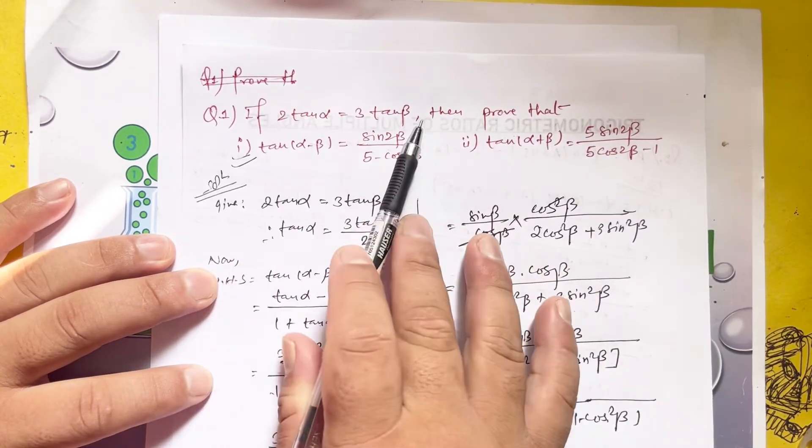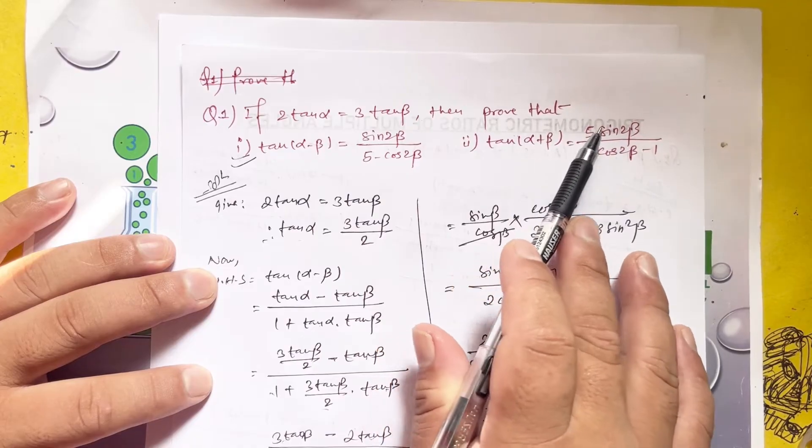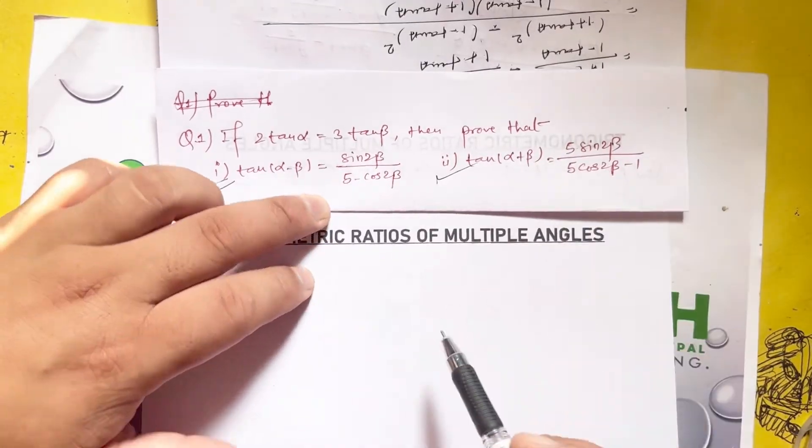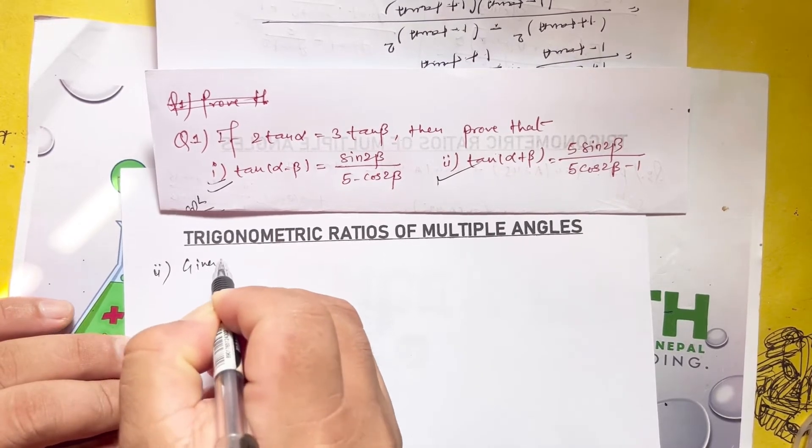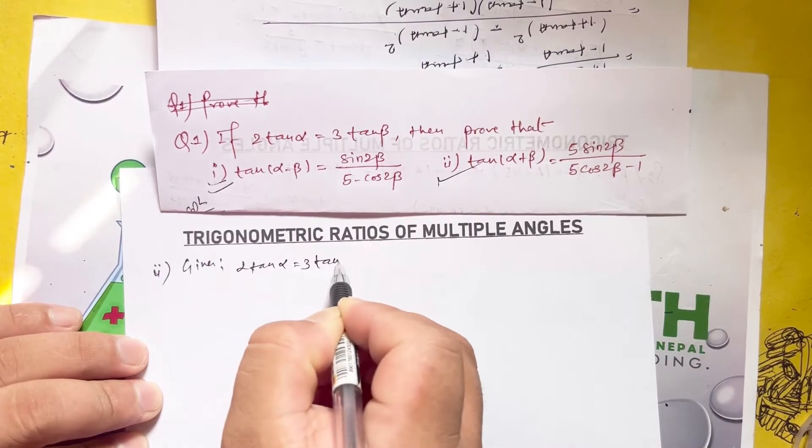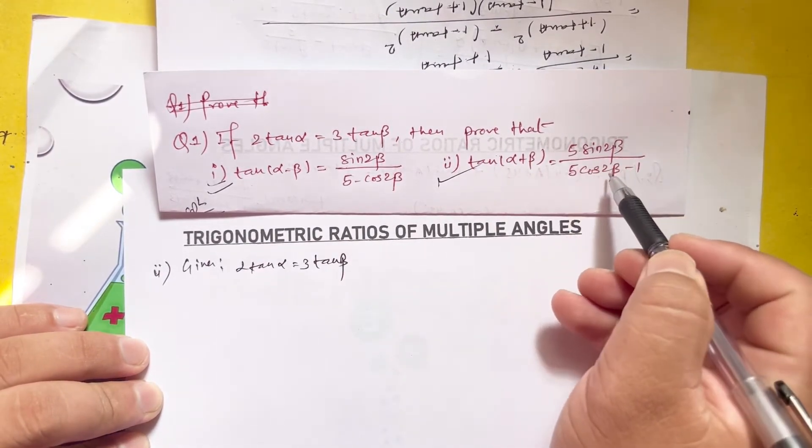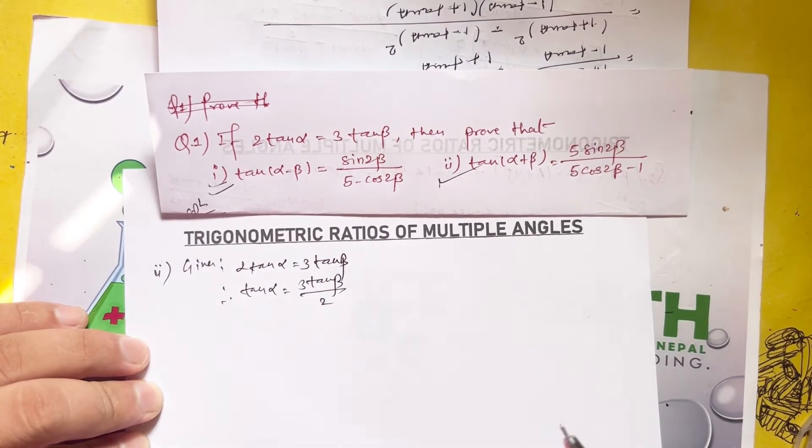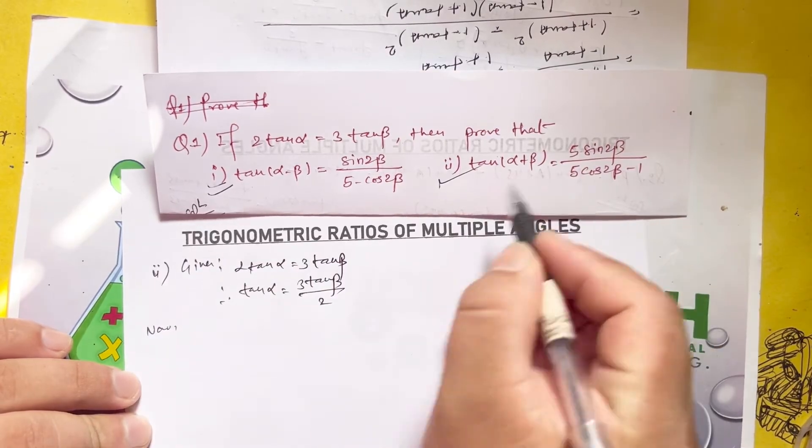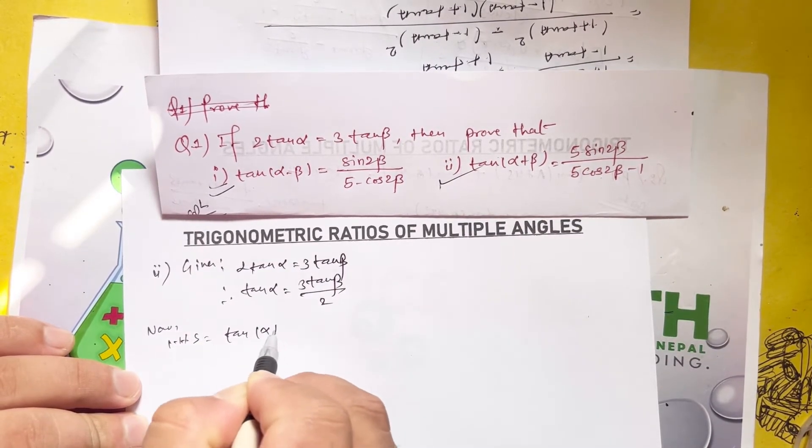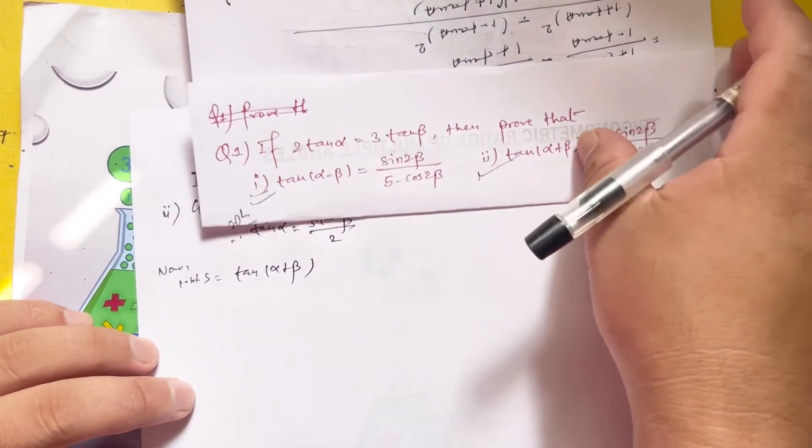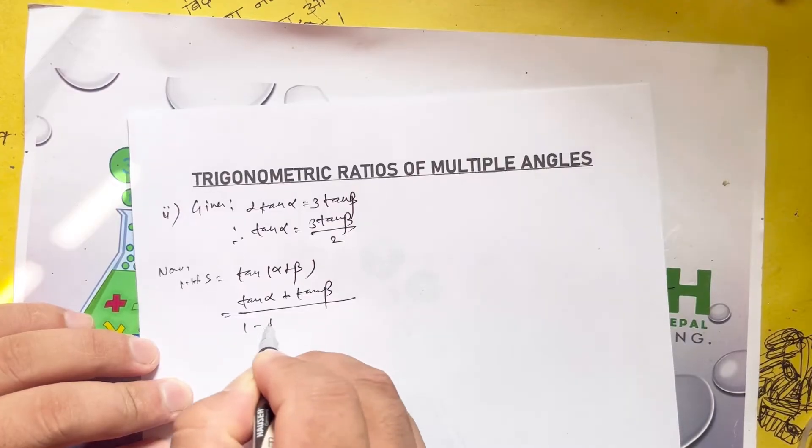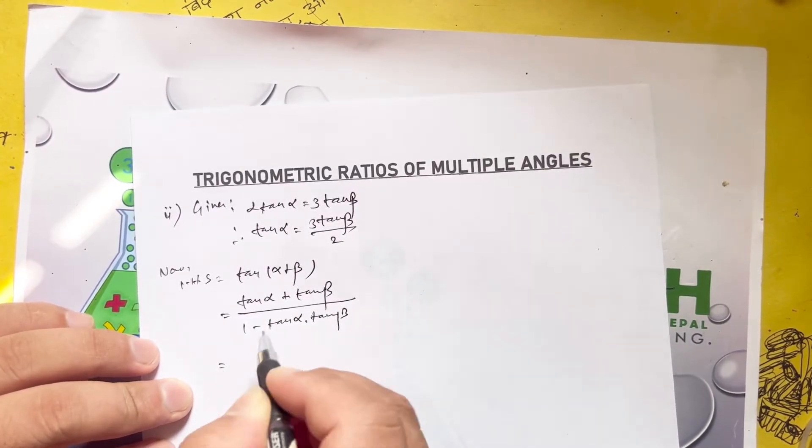For the same given condition, we now prove that tan of alpha plus beta equals 5 sine 2 beta divided by 5 cos 2 beta minus 1. Given 2 tan alpha equals 3 tan beta, so tan alpha equals 3 tan beta by 2.